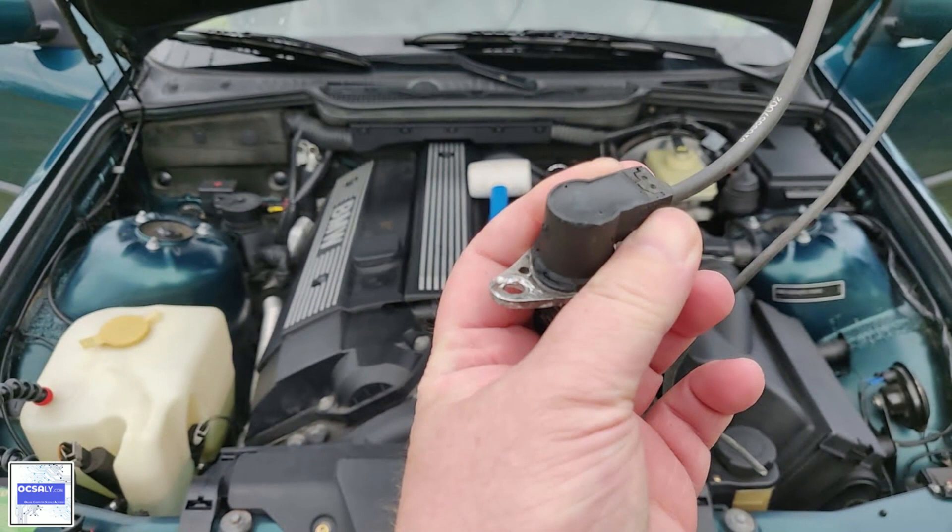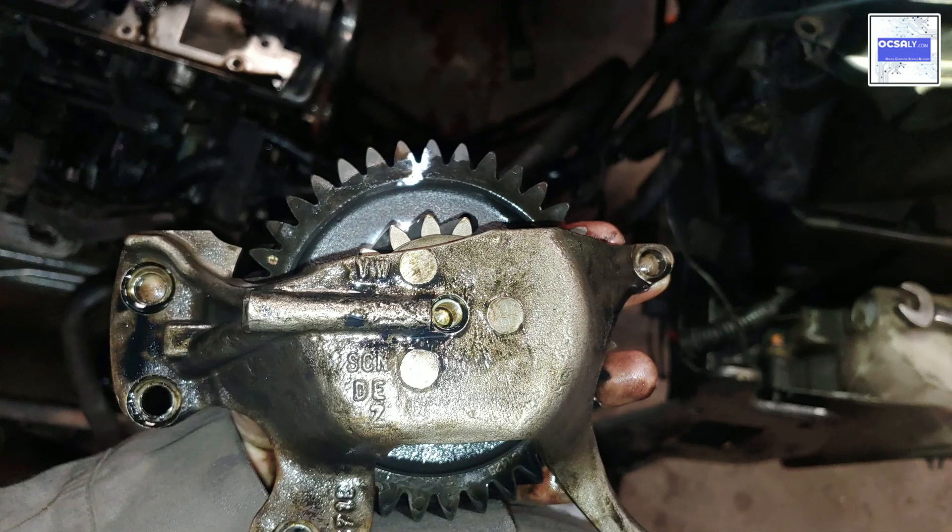In this vehicle, the reluctor ring is made with two missing teeth, as you can notice on the graph.